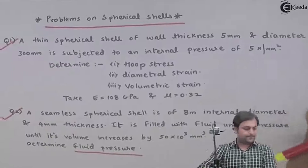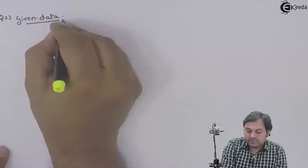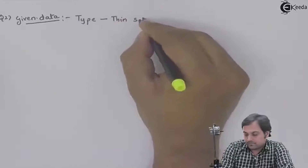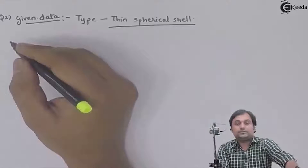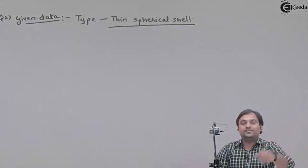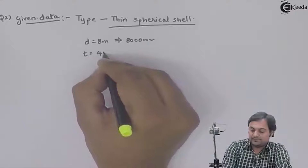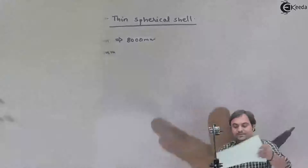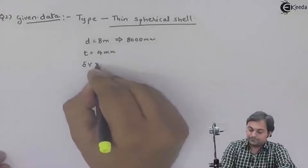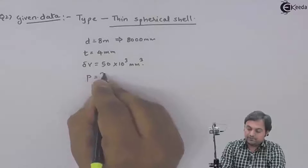Writing the given data: the type is thin spherical shell. The internal diameter is 8 meters, that is 8000 mm, and the thickness is just 4 mm — confirming this is indeed a thin shell. The fluid fills it under pressure and the volume increases by 50×10³ mm³, which is our change in volume. We need to determine the fluid pressure.